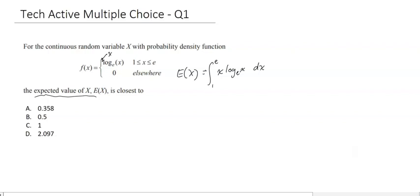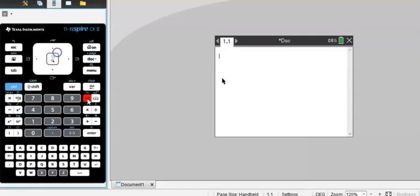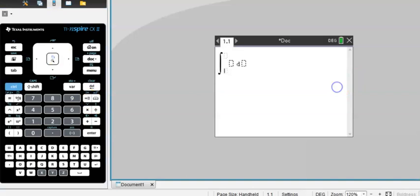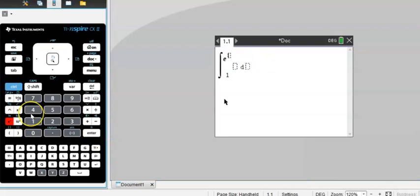Now luckily we have a calculator so we can just type that. We need this button here, we're going to be integrating between 1 on the bottom and e to the 1. And then it's x times natural log x. And we're doing that with respect to x. I've put a few too many brackets there, don't need all those.